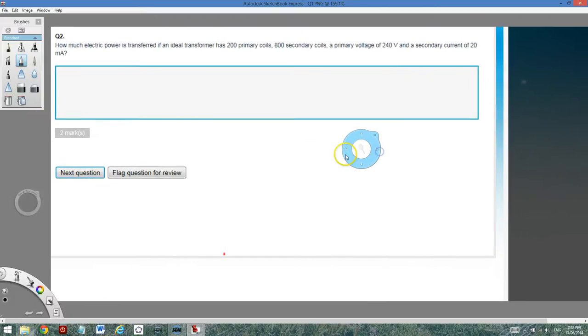So in this question, the question asks for the power of an ideal transformer if as N1, the primary coil, that's N2, and the voltage of primary V1, and the secondary current I2. Now remember, the unit is milliamps, so convert it in amps, 0.02.